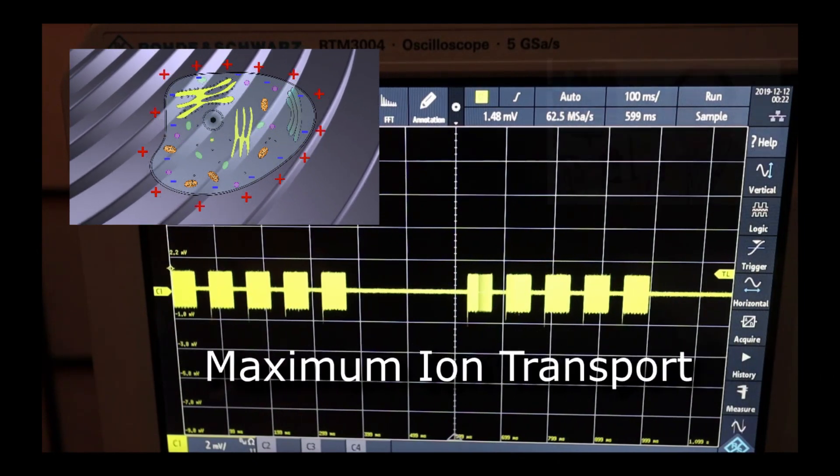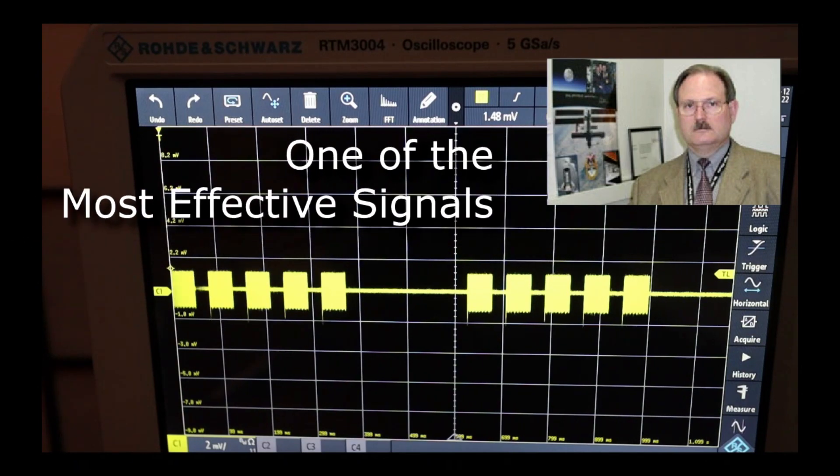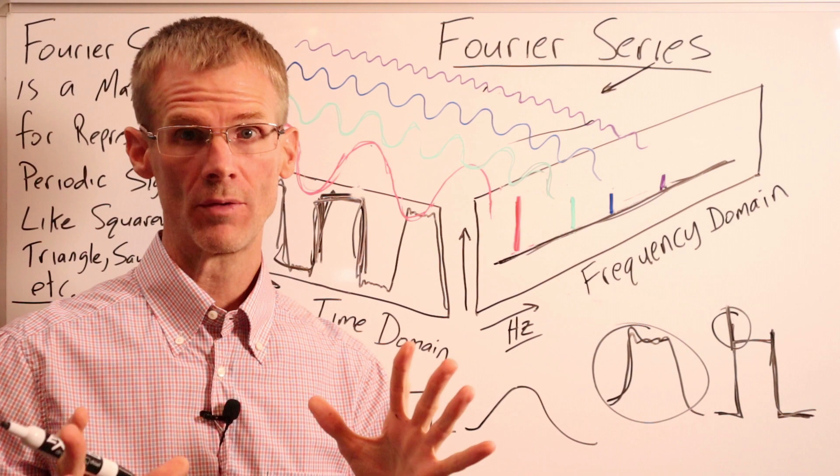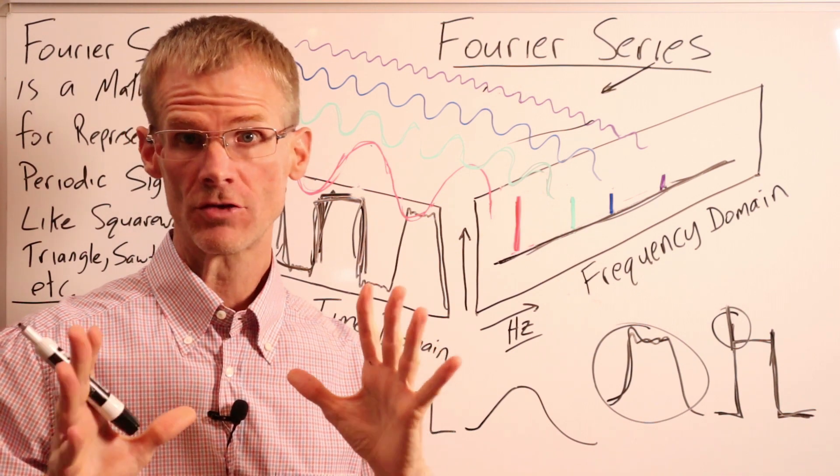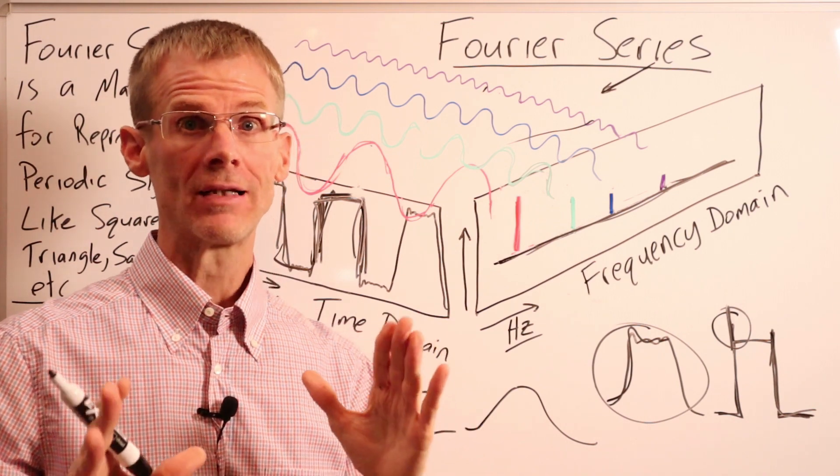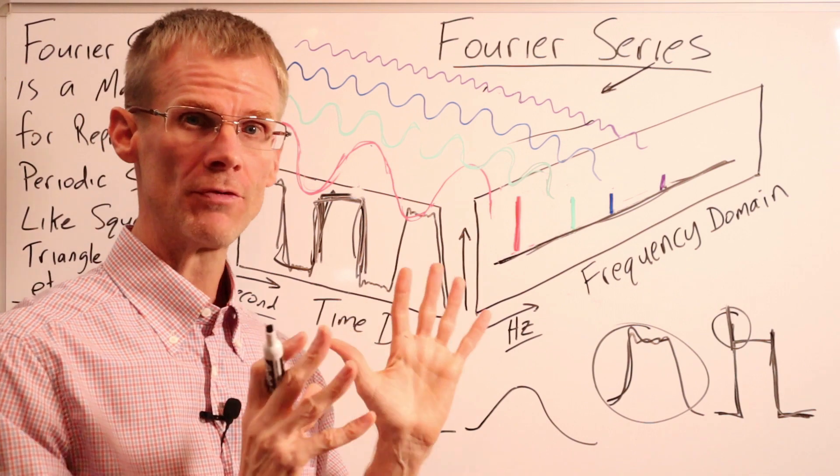And this is why the square wave, as Dr. Goodwin in the NASA study showed, is one of the most effective signals for healing and regeneration. So now that you've seen the IMRS 2000 square wave, and why NASA found the square wave to be the most effective signal for healing and regeneration, let's now take a closer look at the square wave.